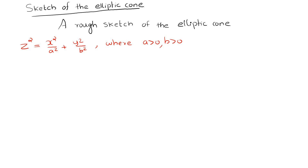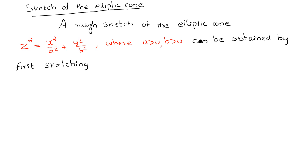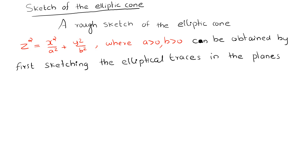A rough sketch of the elliptic cone z squared equals x squared by a squared plus y squared by b squared, where a greater than zero and b greater than zero, can be obtained by first sketching the elliptical traces in the planes z is equal to plus or minus one.